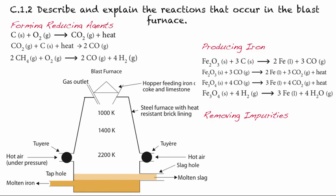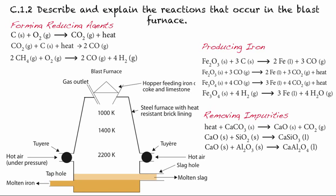In terms of removing impurities like silicon, you can add calcium carbonate — that's where the limestone is being added in. When that happens, it forms calcium oxide and carbon dioxide. The calcium oxide can then react with the silicon dioxide impurities, forming a calcium silicon oxide material, which can be removed separately from the iron.